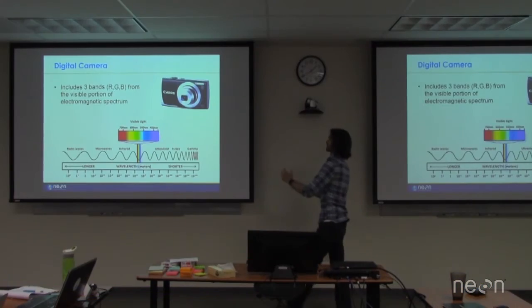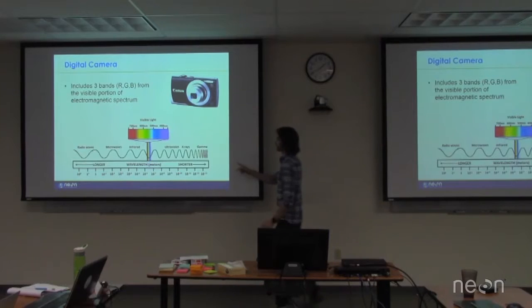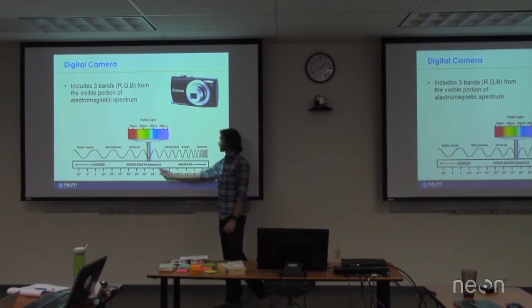So I want to start with something everybody's familiar with, just a typical RGB digital camera that we all use. Normally this type of sensor takes information in three bands: red, green, and blue, which come from this portion of the electromagnetic spectrum.